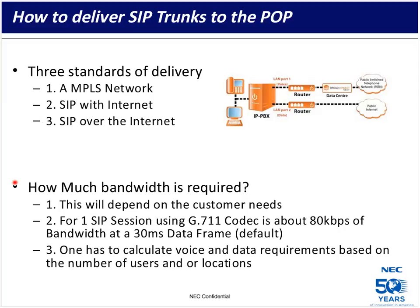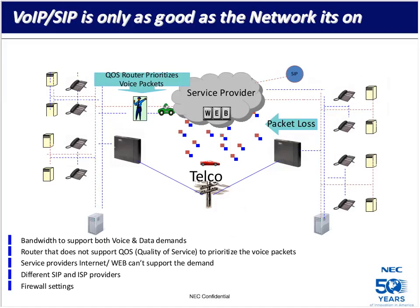How much bandwidth is required depends on the customer's needs. For one SIP session using the G.711 codec, this is roughly 80 kilobits per second of bandwidth — that's our default setting. One needs to calculate voice and data requirements based on the number of users and remote locations. The big thing to remember is that voice over IP and SIP service is only going to be as good as the network it's running on. Network infrastructure at the user's location becomes very important, and in some instances you may require quality-of-service routers to prioritize voice traffic.